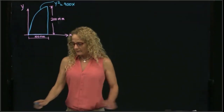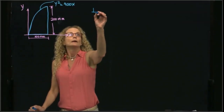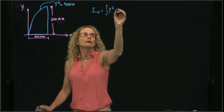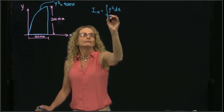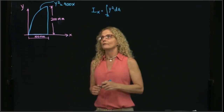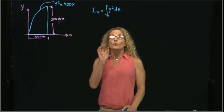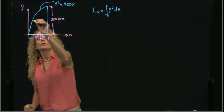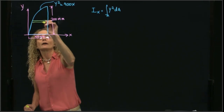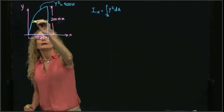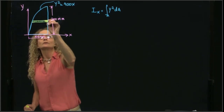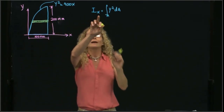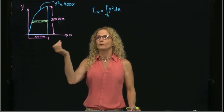By the definition of the moment of inertia with respect to x, we have y squared times the area, and this is an integral in terms of area. For the area moment of inertia in the x-direction, I will use a horizontal strip — a strip parallel to the axis for which I want to calculate the area moment of inertia.